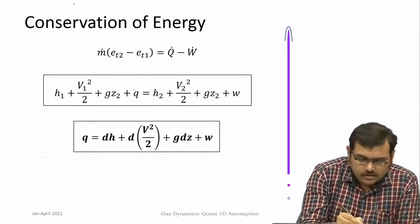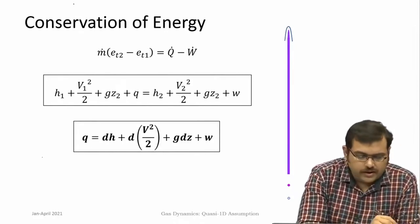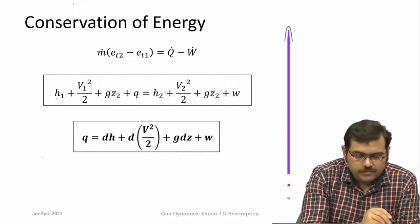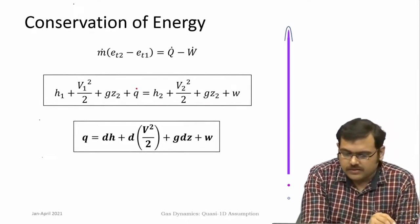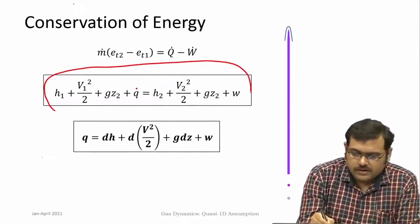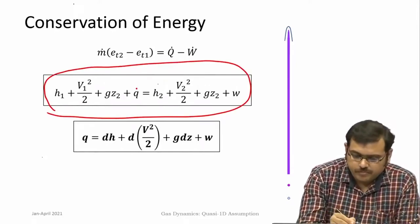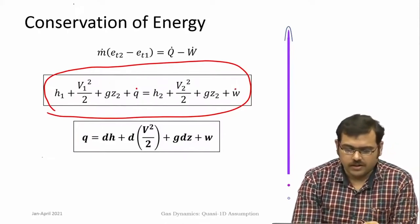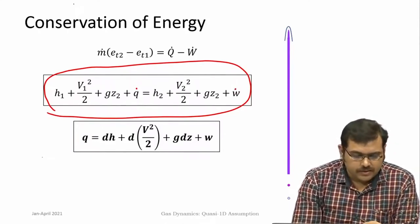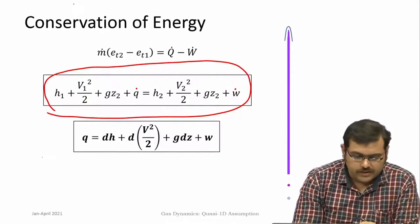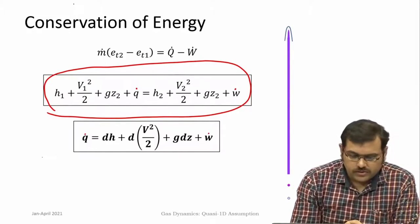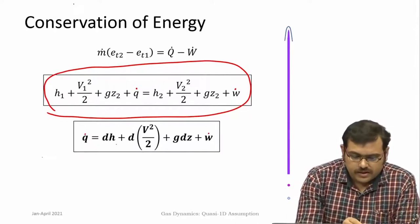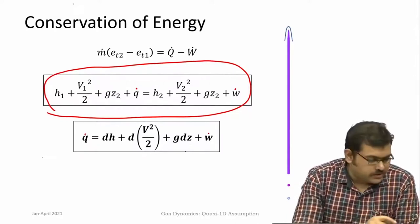This has been expanded and can be written in terms of enthalpy. The final equation after integrating involves q-dot and w-dot. This can also be differentiated to give the rate at which heat is added and rate at which work is done: dh + d(v²/2) + g dz.